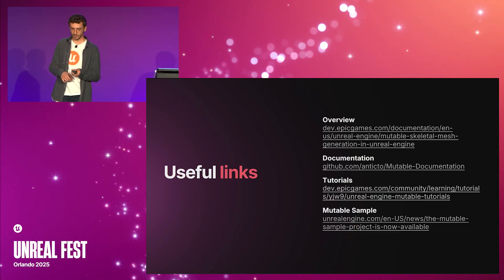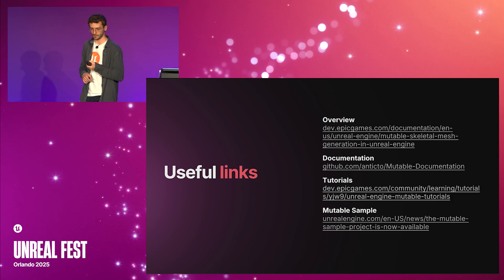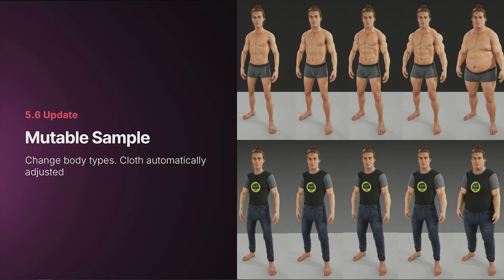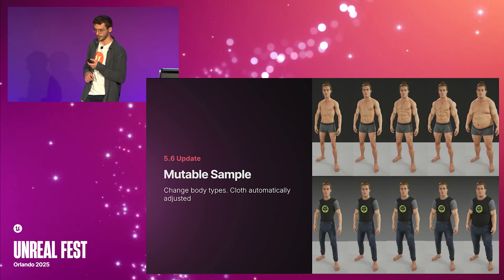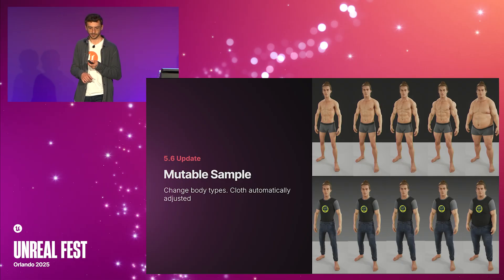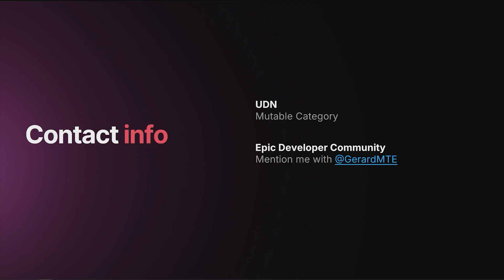If you want to start playing with Mutable, here are some useful links — you'll have QR codes at the end of the slides. I personally recommend following the tutorials and starting with the Mutable sample. Also keep an eye on the upcoming Mutable sample update, in which you will be able to change the body type of a character and see how all clothing pieces get automatically adjusted. If you want to get in touch, you can contact the Mutable team through UDN or contact me directly through the Epic developer community.